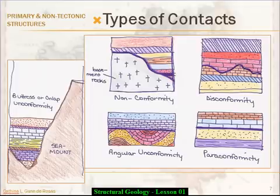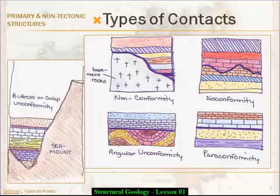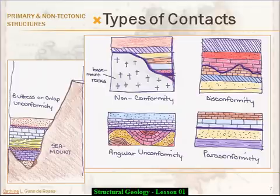An angular unconformity is pretty self-explanatory: you've got an eroded bed that's been upturned, compacted, or folded, and then eroded away, and new horizontal layers are laid over it. Of course, by the time you look at them they may not be horizontal anymore, but they were horizontal to the surface that was eroded. Then you've got a buttress or on-lap unconformity over here. Think about the ocean floor — even though a lot of abyssal plains are flat, you have seamounts and other topography. Sedimentary layers being laid around non-planar topography create a contact that is not horizontal, and so that's what you call a buttress or on-lap unconformity.